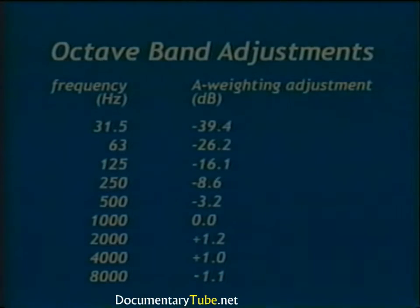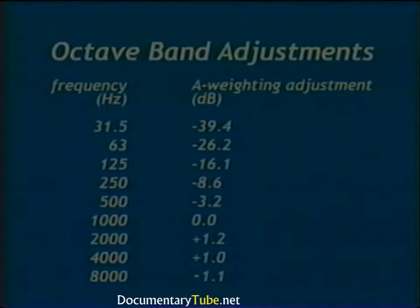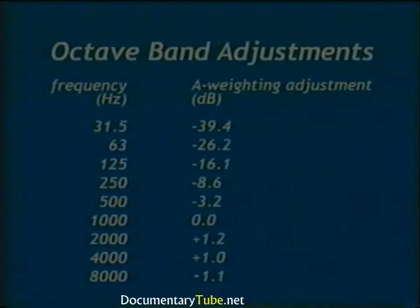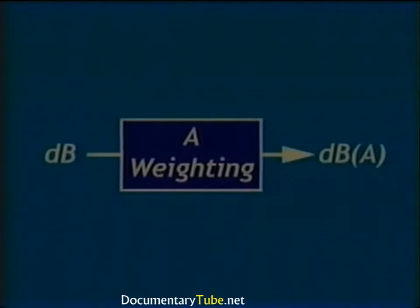The A-weighting curve emphasizes frequencies in the 1000 to 6300 Hz range and de-emphasizes frequencies outside that range. In tabular form for octave bands, each center frequency has a dB adjustment: the 125 Hz band requires −16.1 dB; the 500 Hz band requires −3.2 dB; the 1000 Hz reference band has no adjustment; and the 2000 Hz band requires +1.2 dB. A sound pressure level with A-weighting applied is stated in units of dBA.